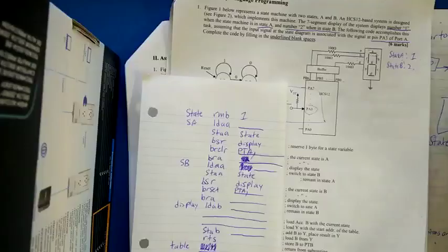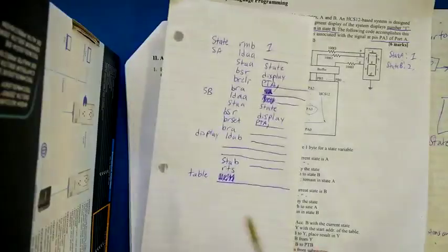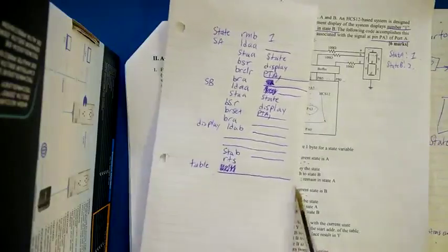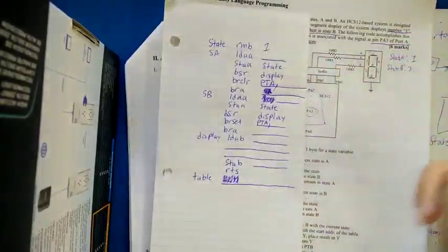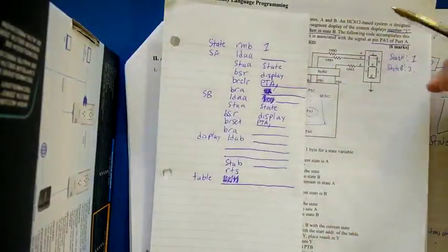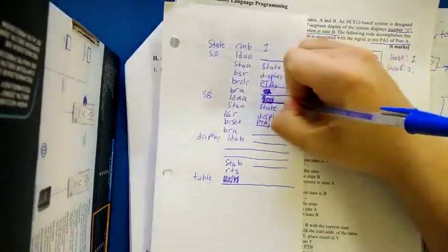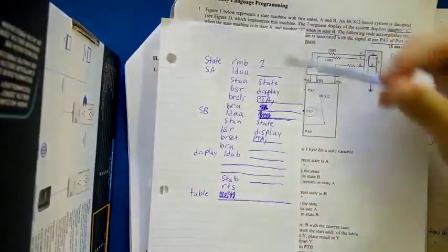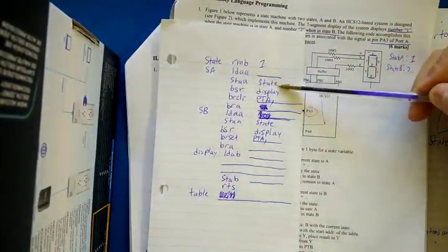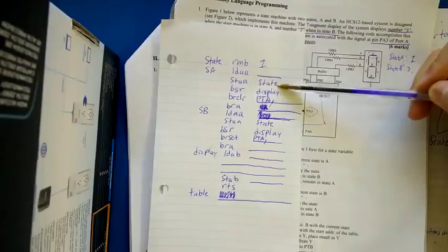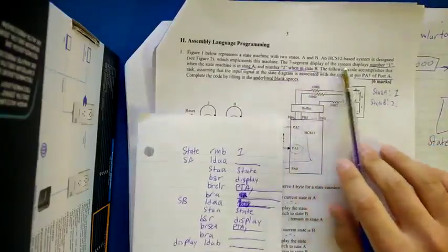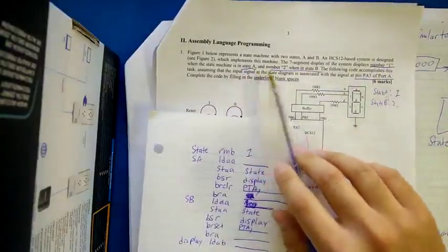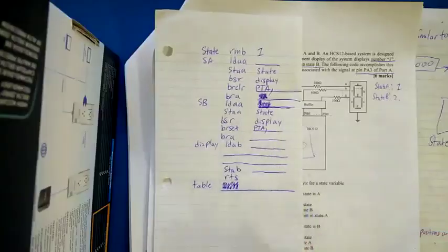At the last line it says 'table' and this is blank, so we need to use table somewhere and we need to use display — we have to figure out exactly what the mechanics of that are going to be. So the first thing you're going to do is load A with something, put that into state, and use state in display, because the display shows one when the state is A and two when the state is B.